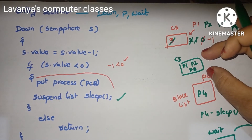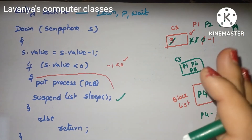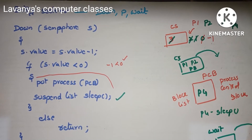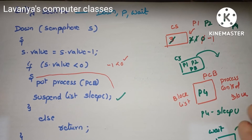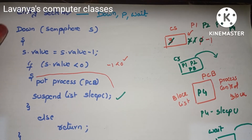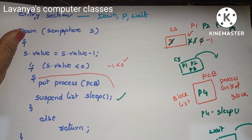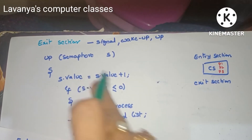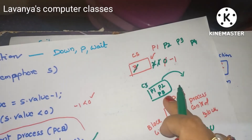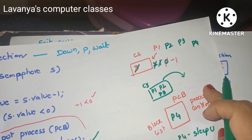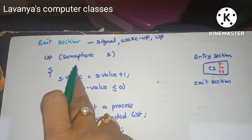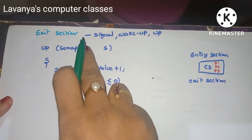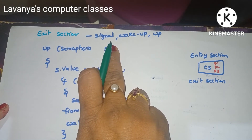Once P1's work is over, P1 wants to come out of the critical section. It is not possible to simply leave — you have to execute the exit section code. Any process coming out of the critical section must execute the exit section, also known as signal, wake up, or up.